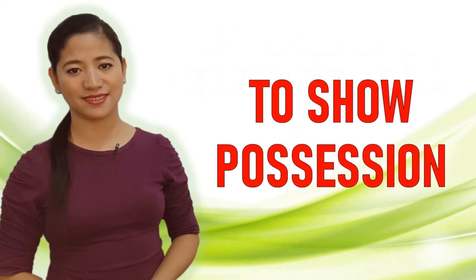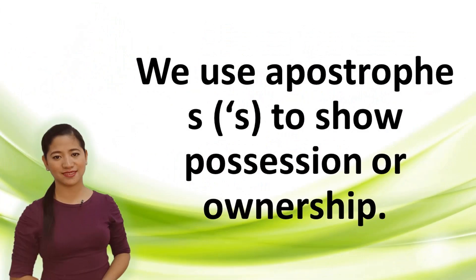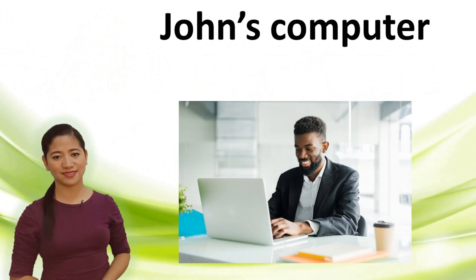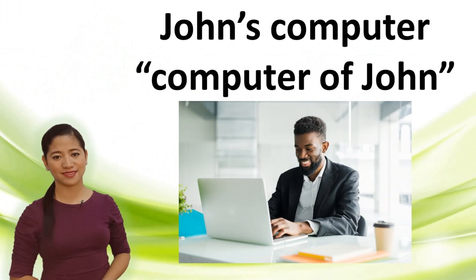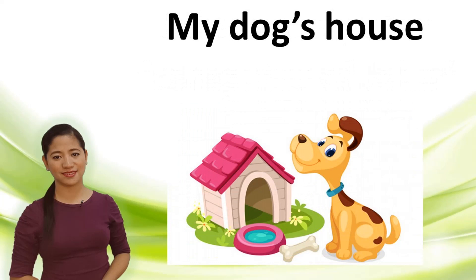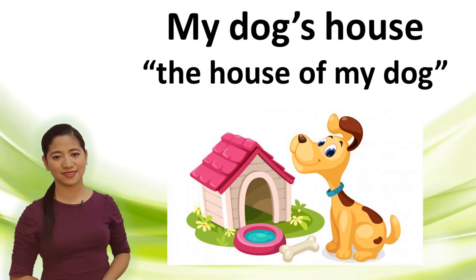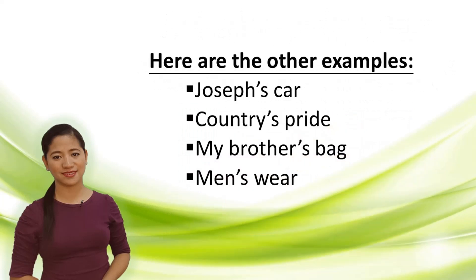To show possession, we use apostrophe S to show possession or ownership. Examples: John's computer — it means the computer of John. My dog's house — it means the house of my dog. Here are other examples: Joseph's car, country's pride, my brother's bag, men's wear.